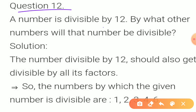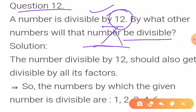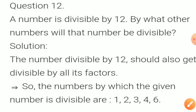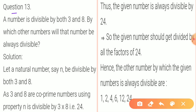Question 12: a number is divisible by 12 — by what other numbers will it also be divisible? If a number is divisible by 12, it must be divisible by all the factors of 12. The factors of 12 are 1, 2, 3, 4, and 6. So the number will be fully divisible by all of these.